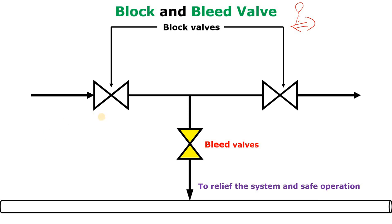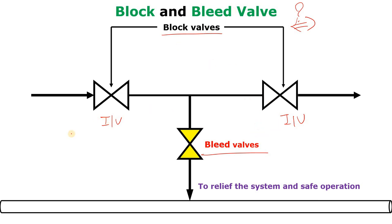There is one isolation valve — that is my first isolation valve — and this is my second isolation valve, also called the block valves. And this is my bleed valve. The combination of these three valves is called the block and bleed valve.